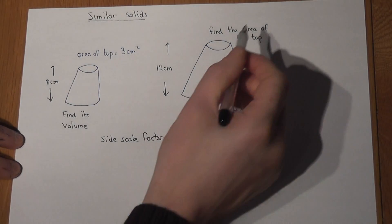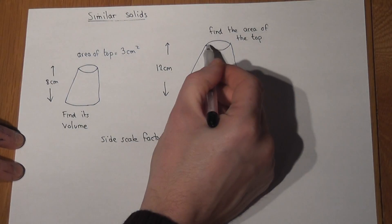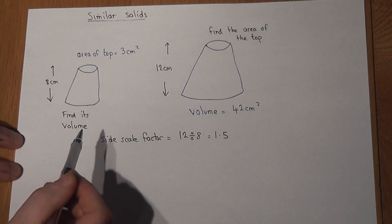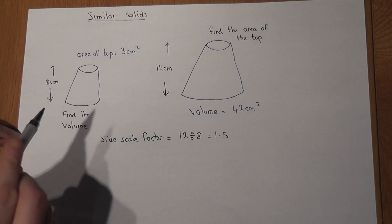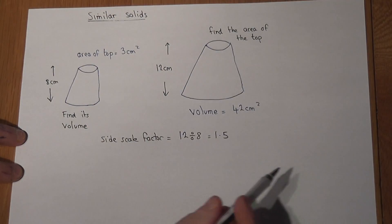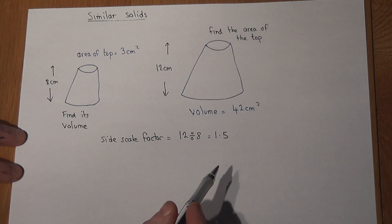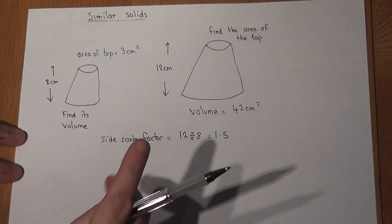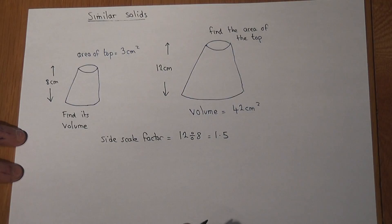Now we're asked to find the area of the top of the larger shape and the volume of the smaller one. However, here's the really important thing: we don't just times these measurements by 1.5. There are two really important rules to know about, as follows.